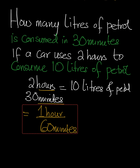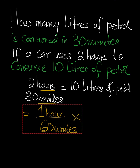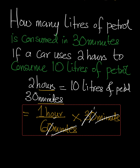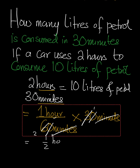So every 60 minutes equals one hour, and then we multiply that by the 30 minutes that we need to change. Every 60 minutes gives us one hour, multiplied by 30 minutes. The minutes cancel, the zeros cancel, and the 3 cancels to give 1 over 2 — that's half an hour.